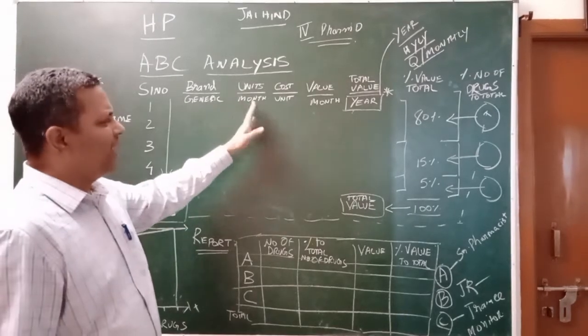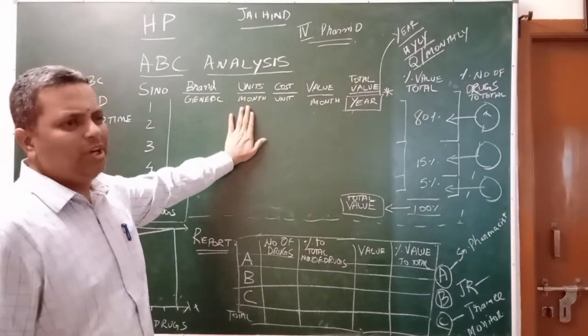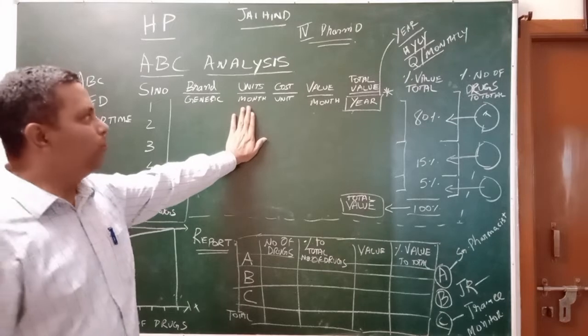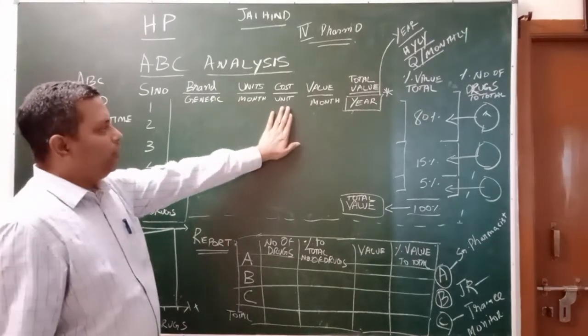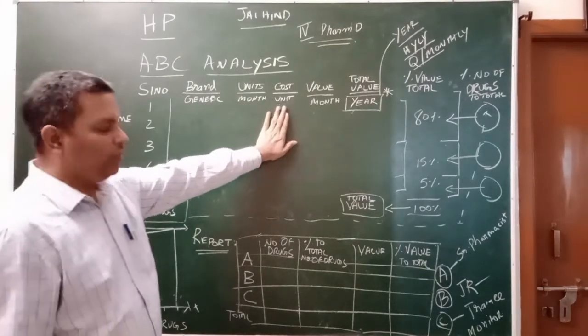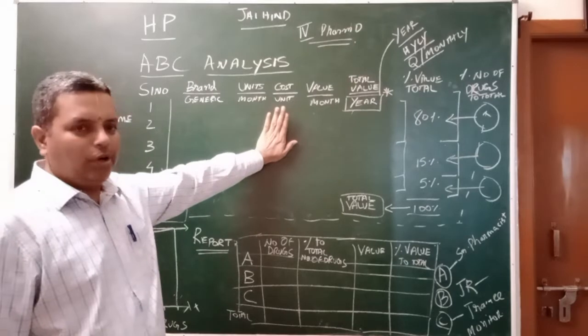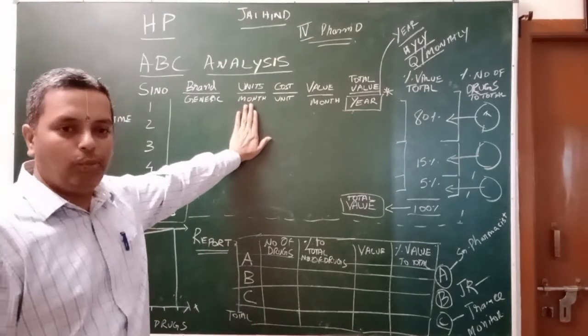You record the units per month, or per year, and the cost per unit for each drug. One unit is multiplied by the units per month to get the value per month.